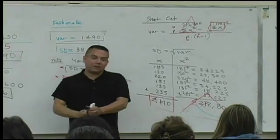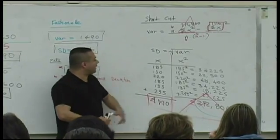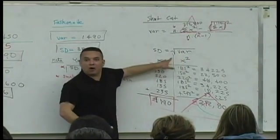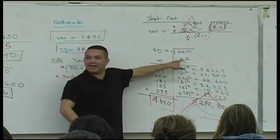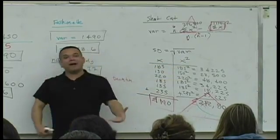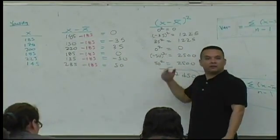Furthermore, what's very nice about the shortcut formula is that you only have two columns, the X and the X squared. What would you guys have using the definition? You got more columns. You got three.